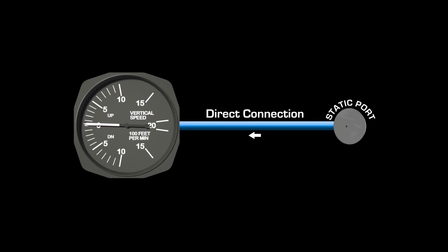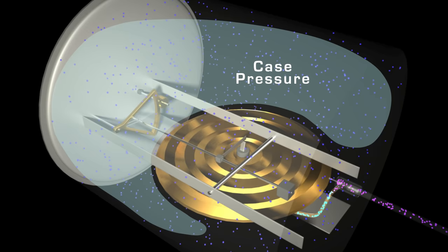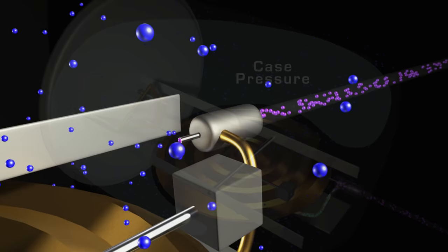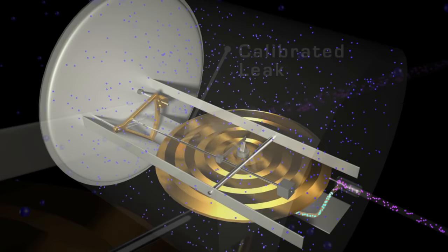The diaphragm has a direct connection to the static port, meaning that the pressure inside of it matches the current atmospheric pressure from the outside. The case of the instrument is also filled with static pressure, but the connection between the case and the static port is constricted by what is called a calibrated leak. This calibrated leak is nothing more than a tiny hole which limits the rate at which the pressure of the case can change.